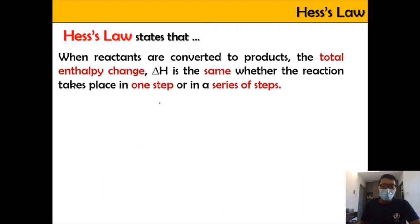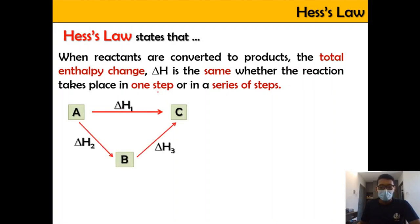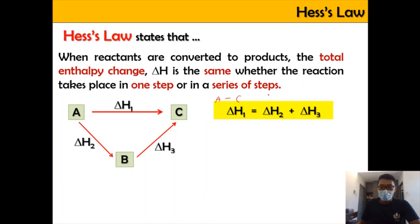Hess Law states that when reactants are converted to products, the total enthalpy change is the same whether the reaction takes place in one step or in a series of steps. So the enthalpy change from A to C, denoted as ΔH₁, is the same as going A to B and then B to C. As long as the initial and final points are the same, the enthalpy change will be the same regardless of which pathway is taken.